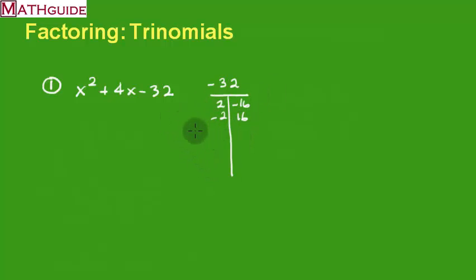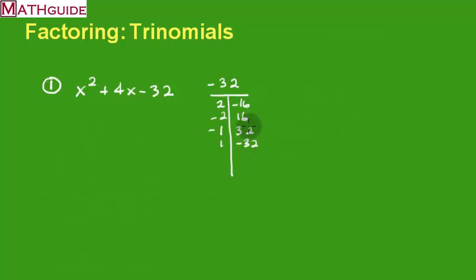So we try something else. How about 1 times 32 — one of them has to be negative. But that's even worse because when I add those I'm getting 31 or negative 31, which is not even close.